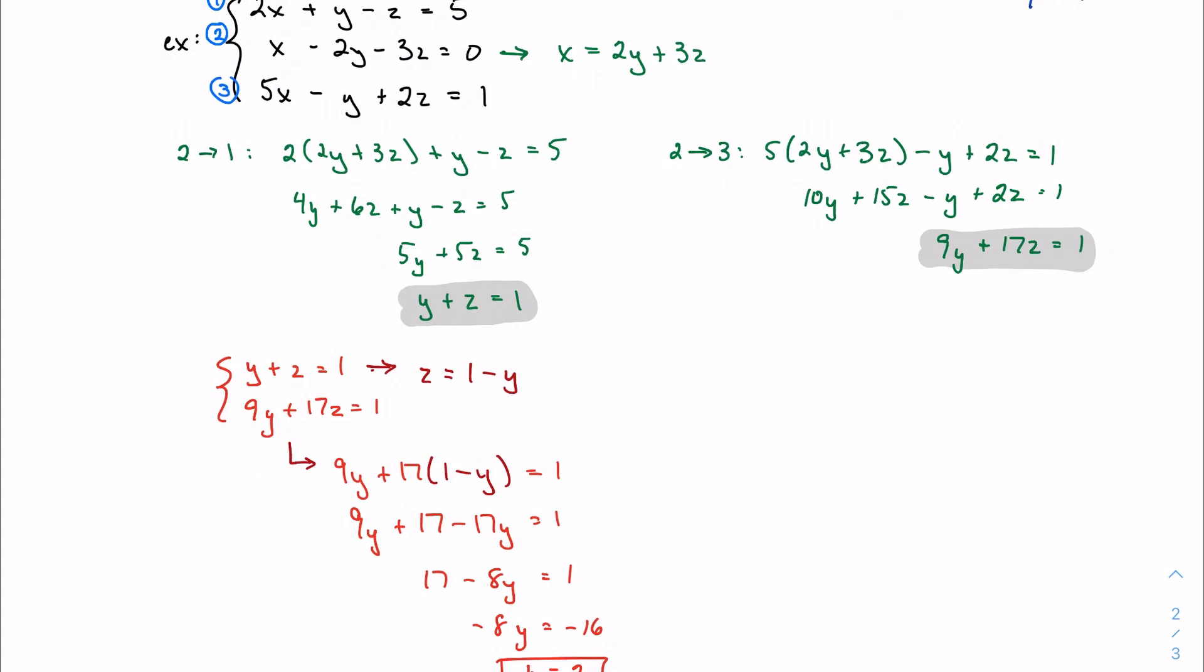Well, now that I've got two, now that I've got one variable, I can work my way back up to get the others. I know that y plus z has to be one. Well, if two plus something has to be one, then that something needs to be negative one. And then we're going to take both of those and work our way back up again.